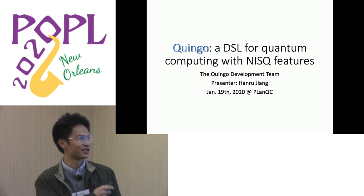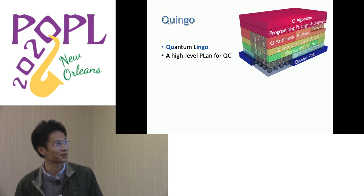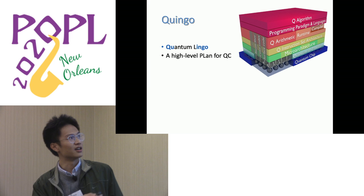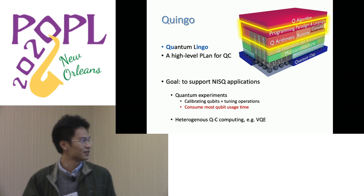Quingo is a name combining 'quantum' and 'lingo.' It is a high-level programming language for quantum computing. It serves as the intermediate layer between quantum algorithms and quantum instruction set architecture. Its goal is to support NISQ applications.